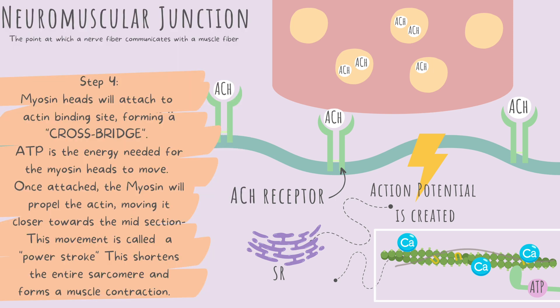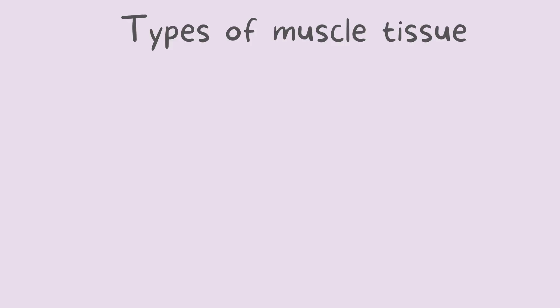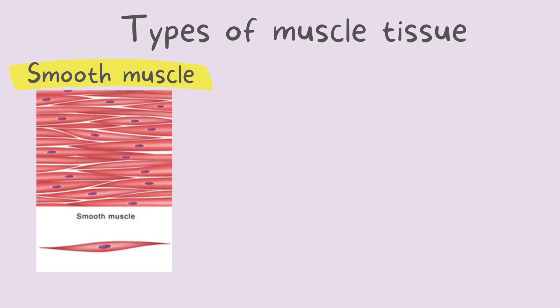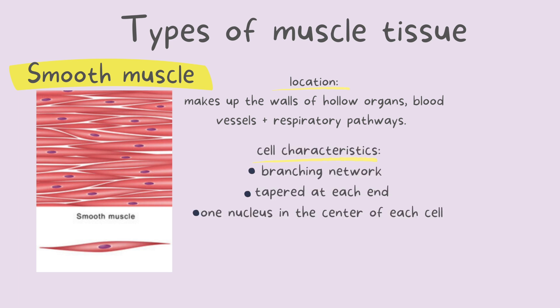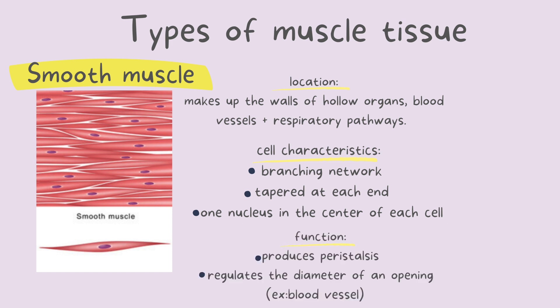That's it for the neuromuscular junction. Let's finish up with types of muscle tissues and their functions. We have three types of muscle tissue. The first is smooth muscle. You will find smooth muscle in the walls of hollow organs, the walls of blood vessels, and respiratory pathways. Smooth muscle cells are in a branching network, tapered at each end, and have one nucleus in the center of each cell. Smooth muscle is involved in producing peristalsis — this wave-like motion produced by contraction and relaxation of the muscles.